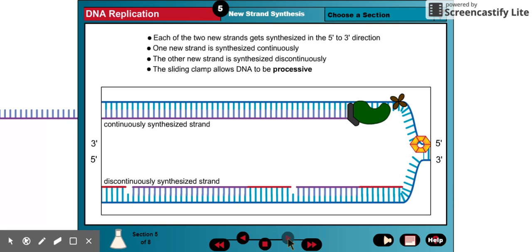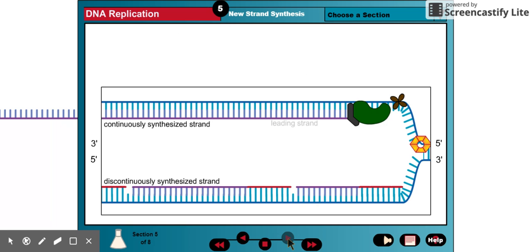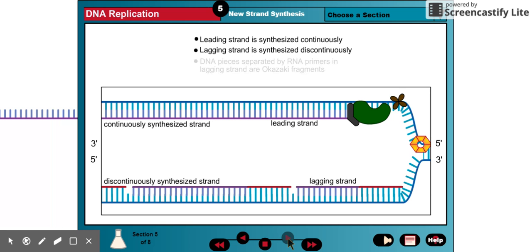The sliding clamp helps hold this DNA polymerase onto the DNA as the DNA moves through the replication machinery. The sliding clamp makes the polymerase processive. The continuously synthesized strand is known as the leading strand, while the strand that is synthesized in short pieces is known as the lagging strand. The short stretches of DNA that make up the lagging strand are known as Okazaki fragments.